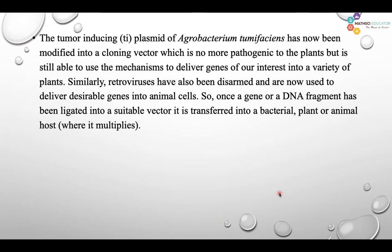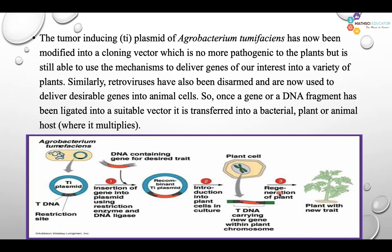The tumor-inducing Ti plasmid of Agrobacterium tumefaciens has now been modified into a cloning vector, which is no longer pathogenic to the plant. But it is still able to use that mechanism to deliver genes of our interest into a variety of plants — it works as a disarmed Agrobacterium tumefaciens. Similarly, retroviruses have also been disarmed and are now used to deliver a desired gene into animal cells.